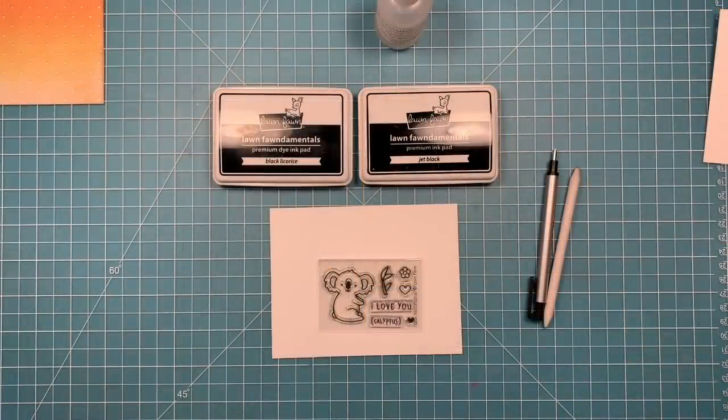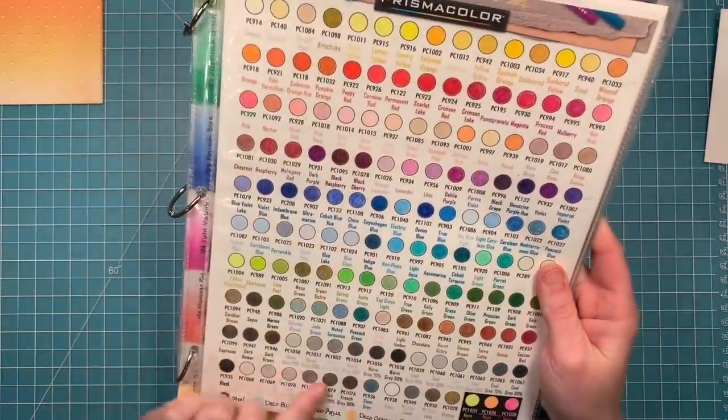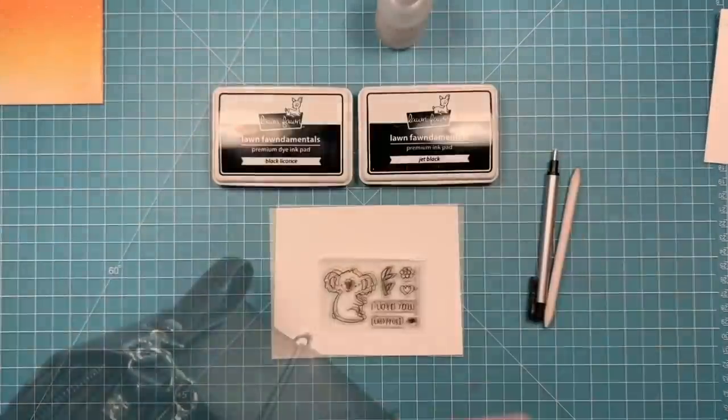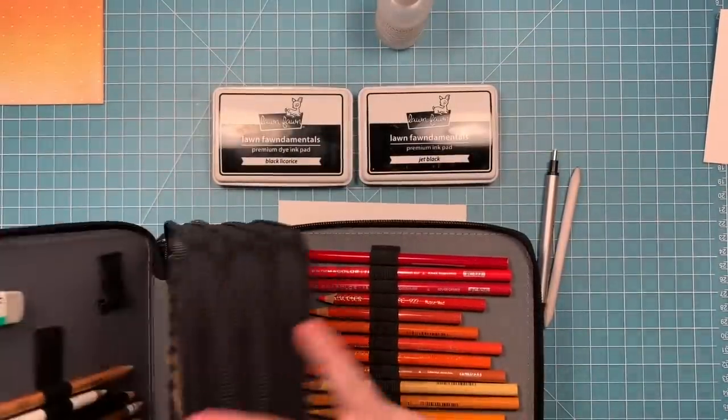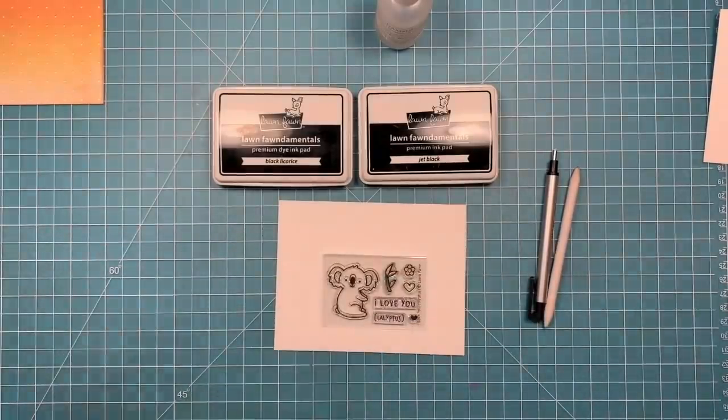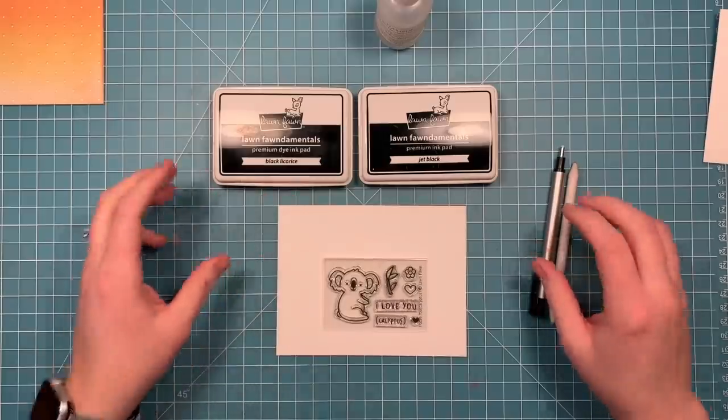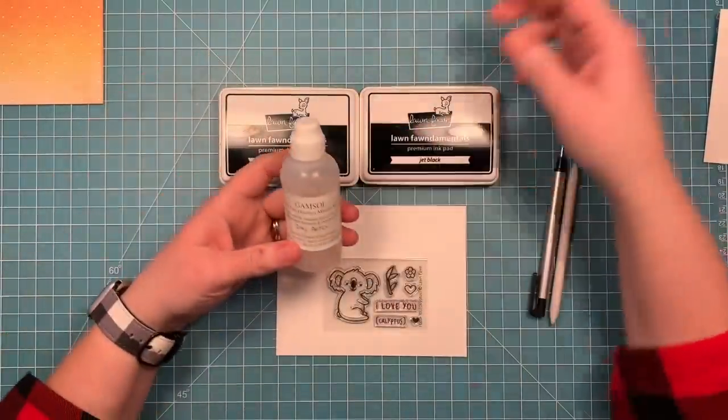So now to do my stamping. I'm going to be coloring with colored pencils. I'm using Prismacolor pencils. Here's my color chart that I keep beside me and my pencil organizer. I'm going to be using French grays for my koala and then a couple pinks and some greens.